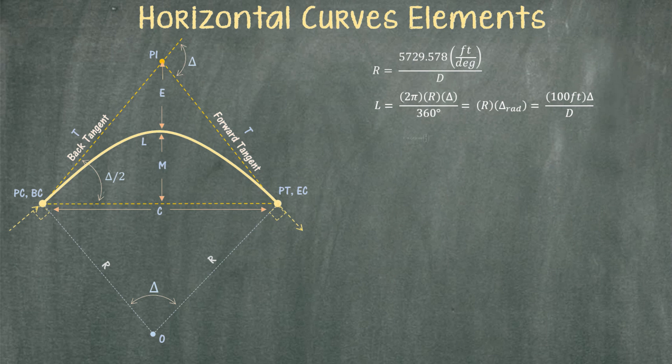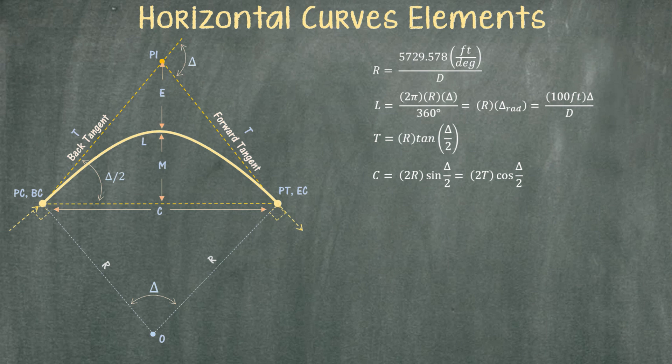To determine the tangents, all you need are the radius and the deflection angle in degrees — just plug in and you get your result. To determine the long chord, you can use the radius and the deflection angle in degrees. Or if the radius is not known and instead they give you the tangent, then just use the second equation.